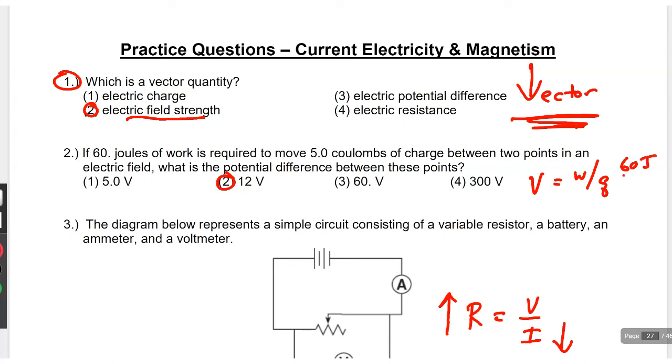This is another V equals W over Q. 60 joules is the W. Q is 5. 60 divided by 5 is 12.